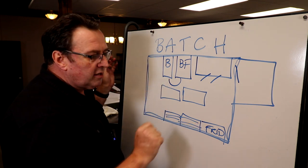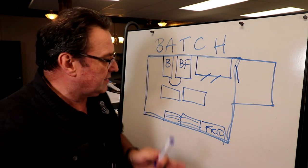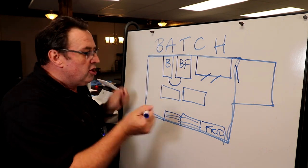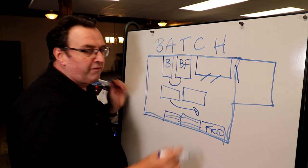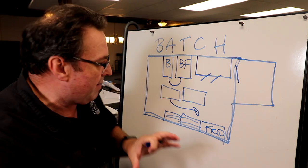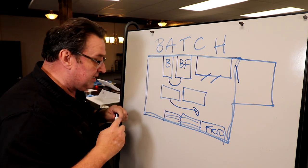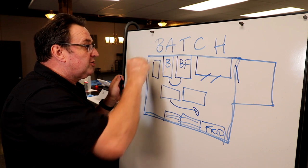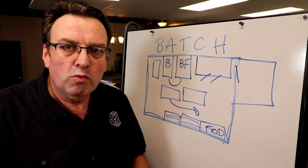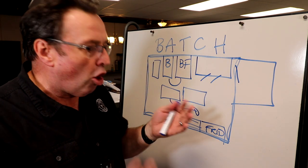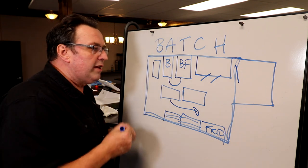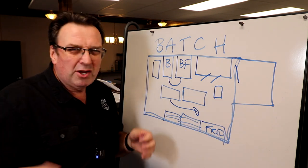You can even move this table over to the fridge, get everything out, stage it, and bring it back over to the batch freezer. You may even prefer to put it alongside here. A lot of times you want to keep as much space as you can open. Another thing that is really helpful is utility carts. They call them dunnage carts, but utility carts can be either stainless steel or plastic.